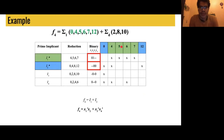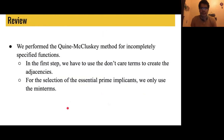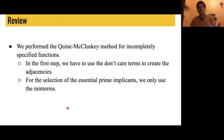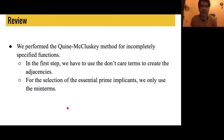The final result is the sum of product expression generated by our essential prime implicants. Let's review the key differences when applying the Quine-McCluskey method to incompletely specified functions: first, for the reduction of adjacencies, we take into account the don't care terms; but in the selection of essential prime implicants, we only consider the minterms of the function. That's all — thank you for watching this video, see you next time.